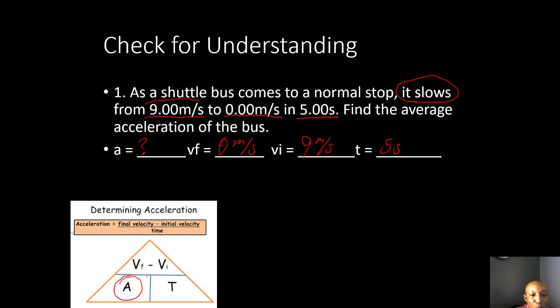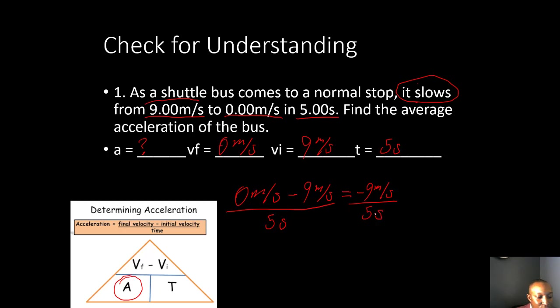Using our triangle, we're solving for acceleration: final velocity minus initial velocity over time. Final velocity is zero meters per second, minus initial velocity of nine meters per second, over five seconds. Zero minus nine gives us negative nine meters per second divided by five seconds. Negative nine divided by five gives us an acceleration of negative 1.8 meters per second squared.